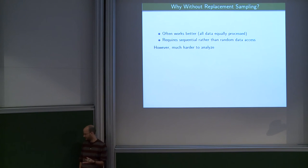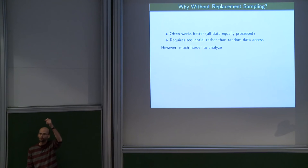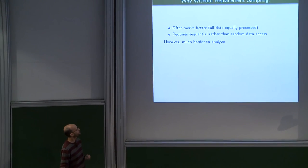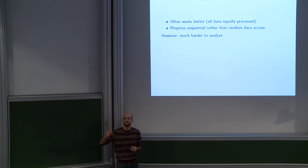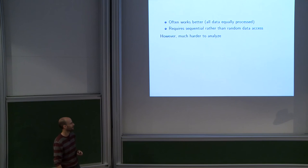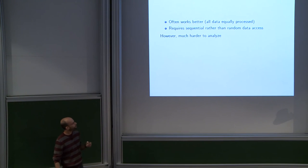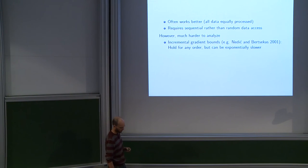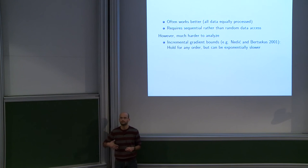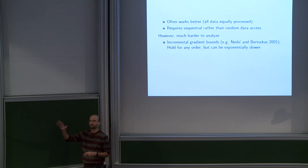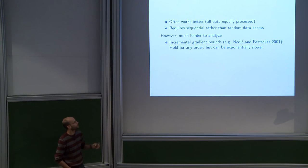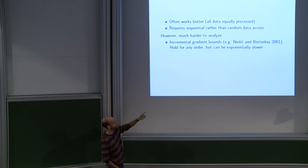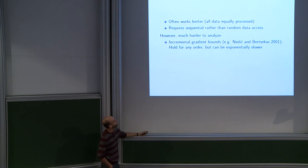Without-replacement sampling works better intuitively because we force the algorithm to process all the data equally — with replacement, this only happens on average. However, it's very difficult to analyze stochastic gradient methods with this kind of sampling because the updates are correlated. Classical results for incremental gradient methods give convergence bounds for any data order but are much weaker. Very recently, work tried to analyze SGD for strongly convex and smooth problems with without-replacement sampling, but required at least n^3 passes, which is unsatisfying since the whole point of SGD is to avoid many passes.